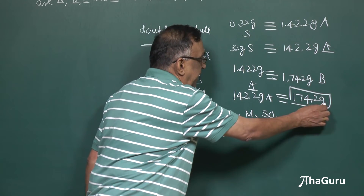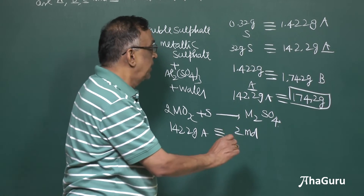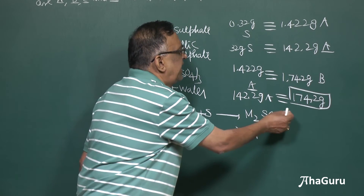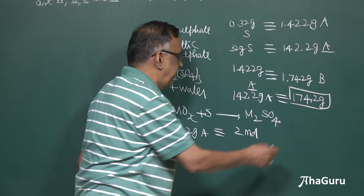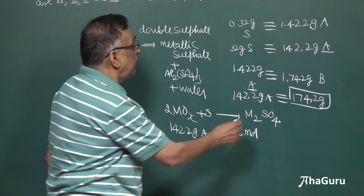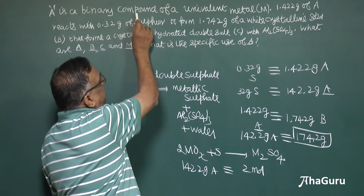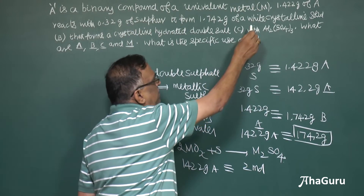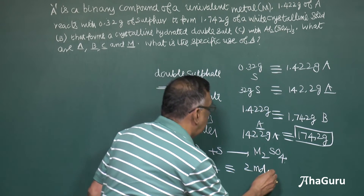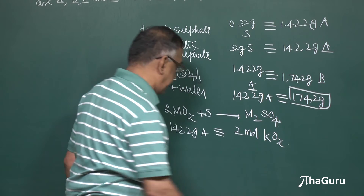174.2 minus 96 corresponds to 2M. Dividing by 2 gives approximately 39, or slightly greater than 39, which happens to be the atomic mass of potassium. So potassium must be involved. The univalent metal M must be potassium. From this information, 2 moles of KOₓ are present since we have identified potassium.